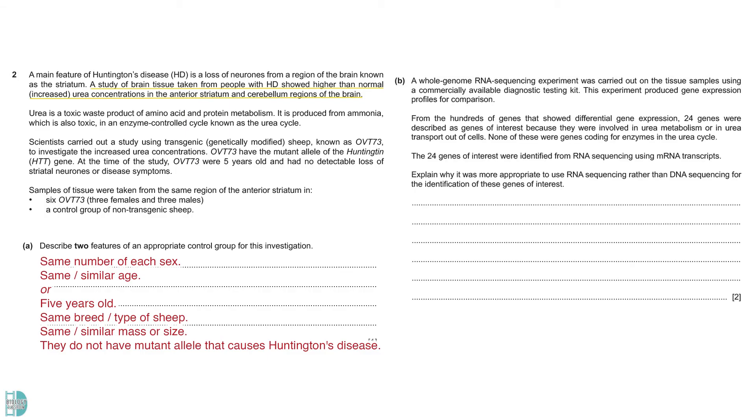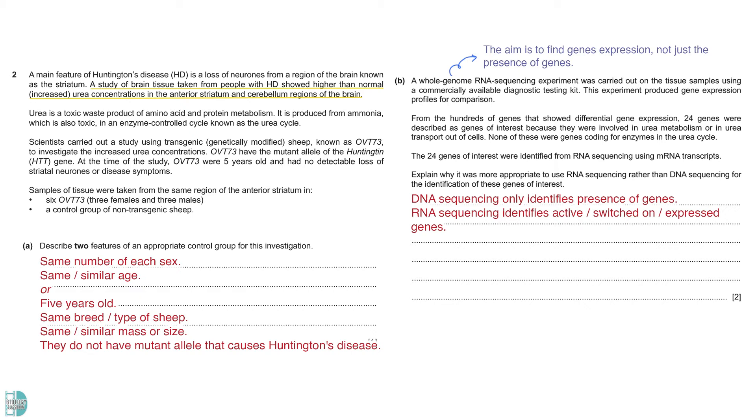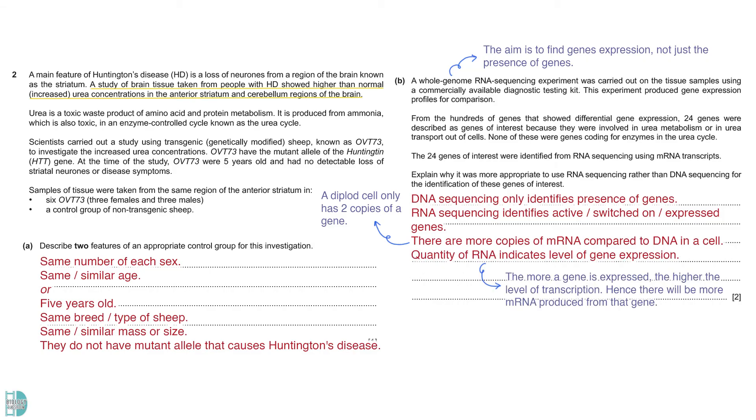Part B talks about whole genome RNA sequencing. This experiment produced gene expression profiles for comparison. 24 genes that are related to urea concentration in the cell were described as genes of interest. Explain why it was more appropriate to use RNA sequencing rather than DNA sequencing for the identification of this gene of interest. The aim here is to know the gene expression of a cell. DNA sequencing only identifies the presence of genes in the cell. It does not function like RNA sequencing which identifies those active genes in the cell which are switched on and expressed. Besides, there are more copies of mRNA compared to DNA in a cell. For a diploid organism, there are only two copies of each gene. But the number of mRNA can be much higher depending on the level of a gene that is being transcribed. With that said, the quantity of RNA in the cell indicates the level of gene expression.